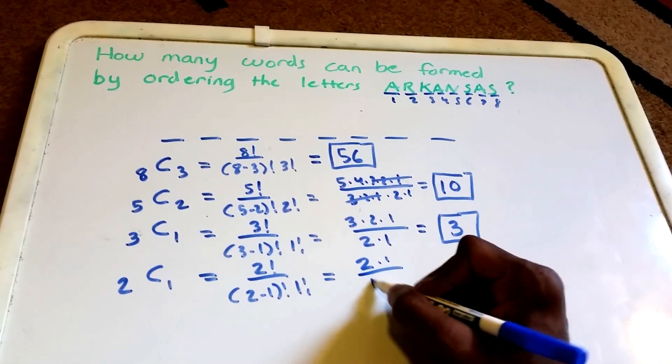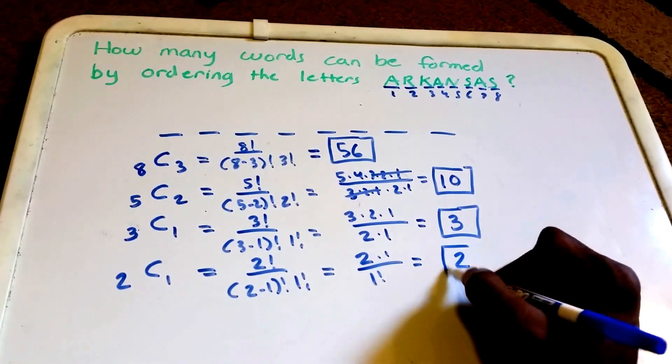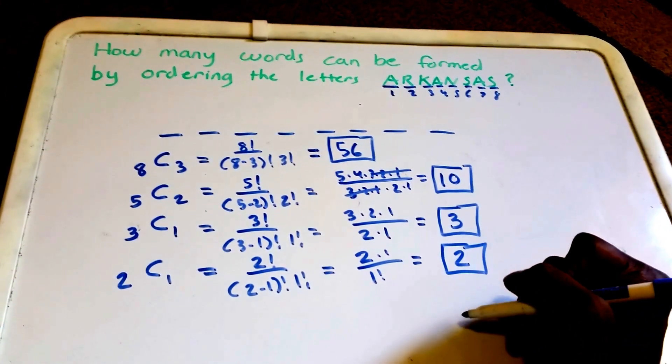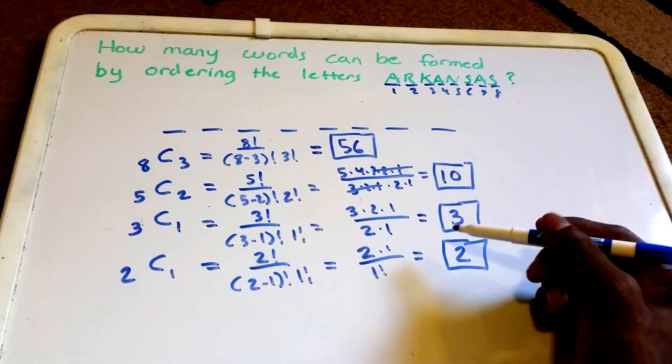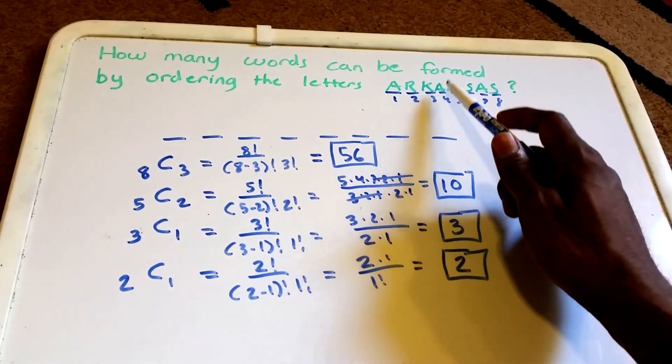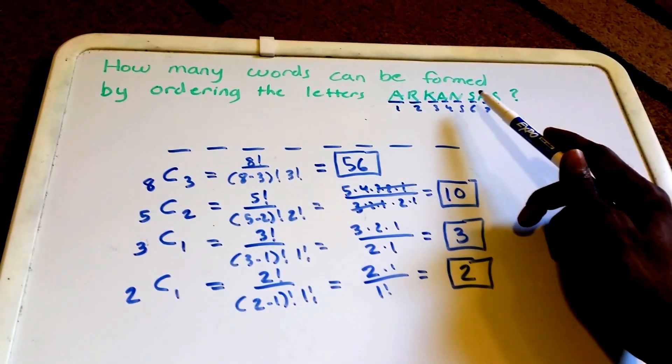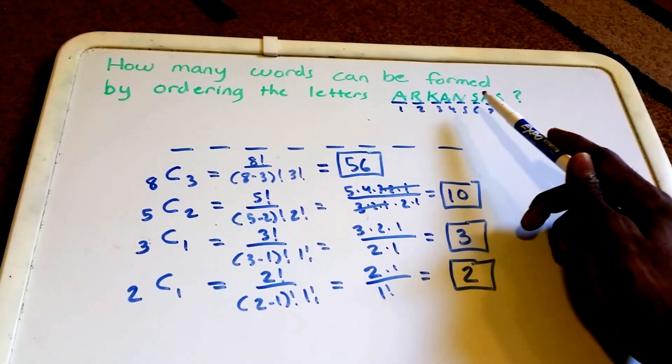Let's see what else we're missing. We have A, R, K, A, N, so let's place the N in the only remaining position.